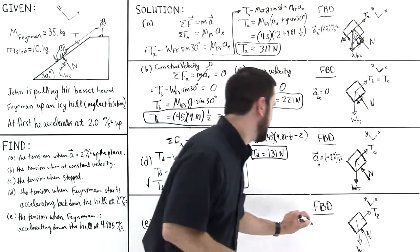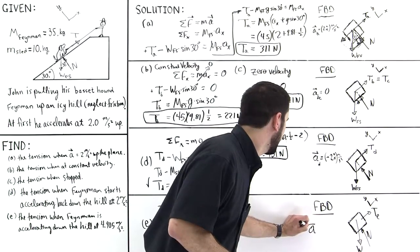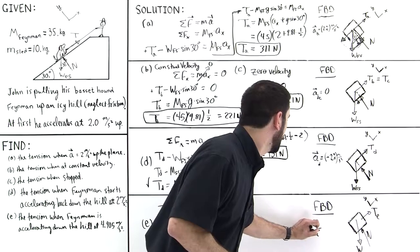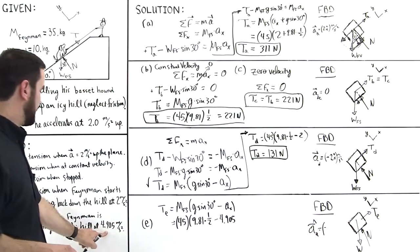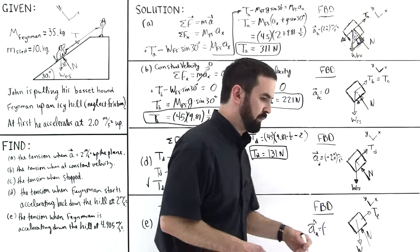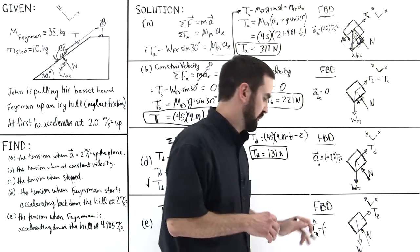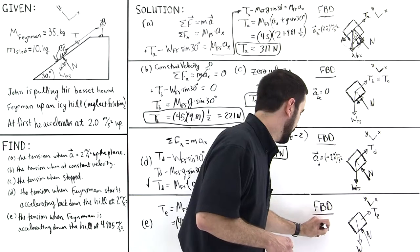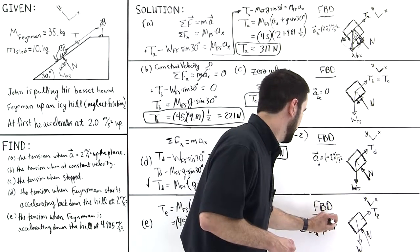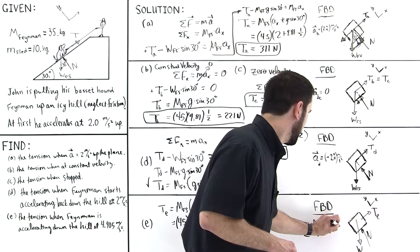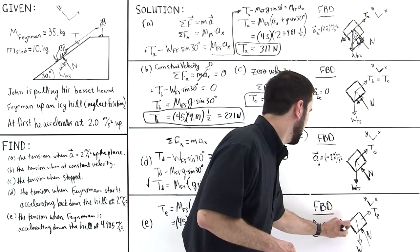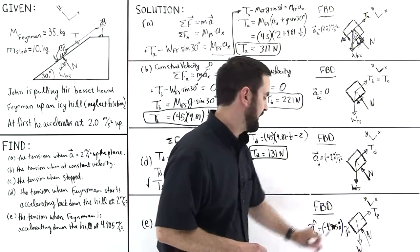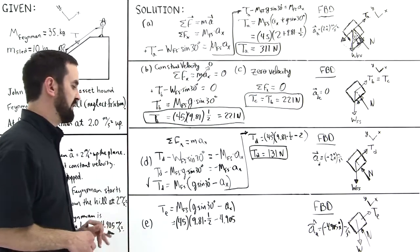So this is the tension in part E, but just for your notes' sake. And then, okay, the acceleration in part E will be equal to negative 4.905, because it's negative 4.905 is describing it moving downward along the plane. And so 4.905 x hat meters per second squared. So this would be the free body diagram for this last situation.